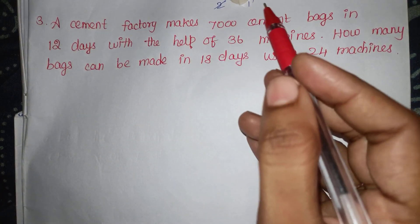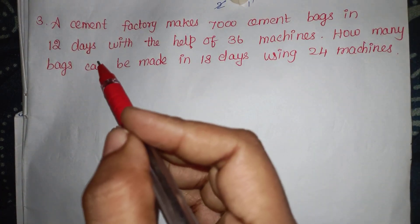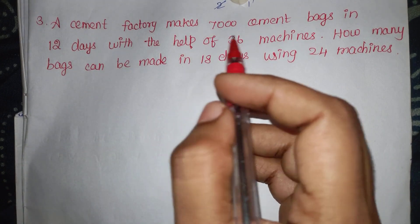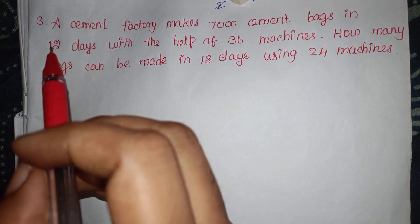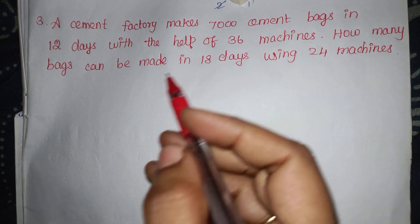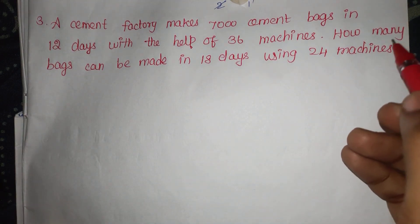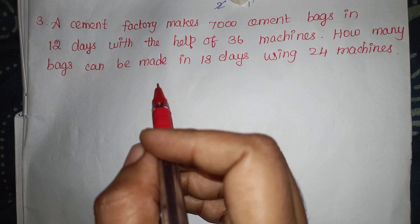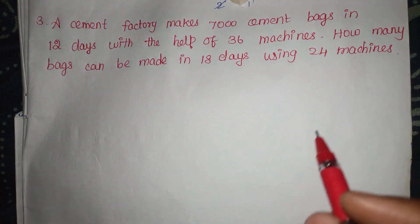A cement factory makes 7000 cement bags in 12 days. One cement factory will make 7000 cement bags in 12 days. So that way, you can make any number of bags — you can use 24 machines.